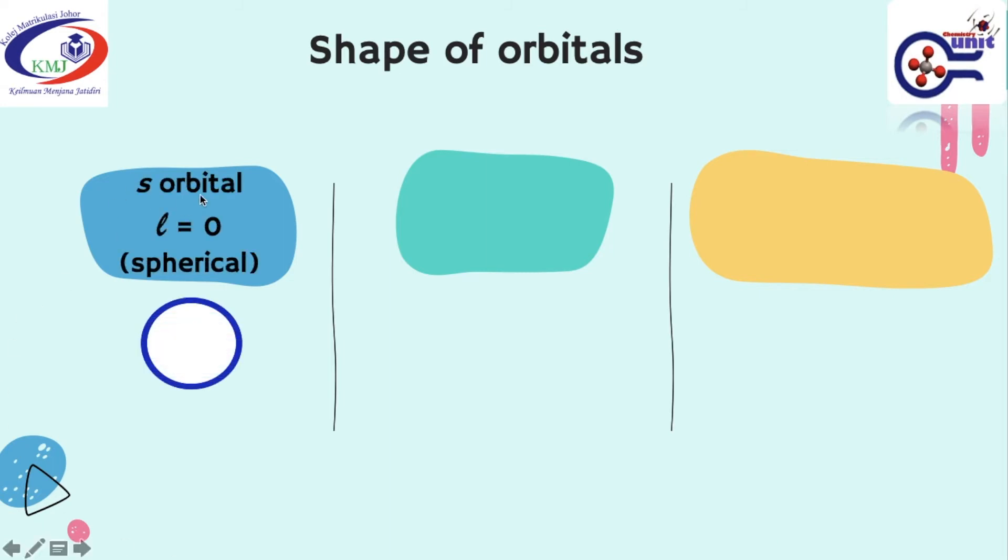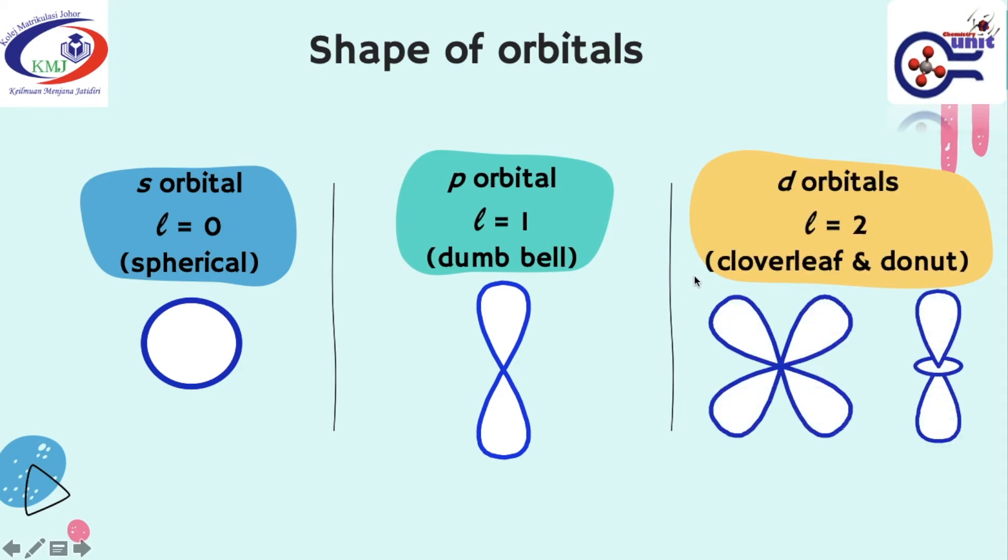S-orbital is when your value of L is 0, the shape is spherical. For P-orbital, when the value of L is equal to 1, it shows the dumbbell shape. The final one is D-orbital, when L is equal to 2, you are going to have clover leaf and donut shape.